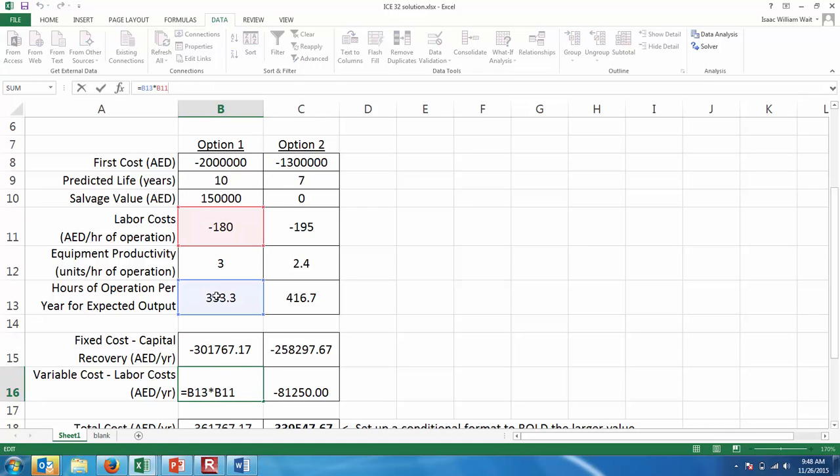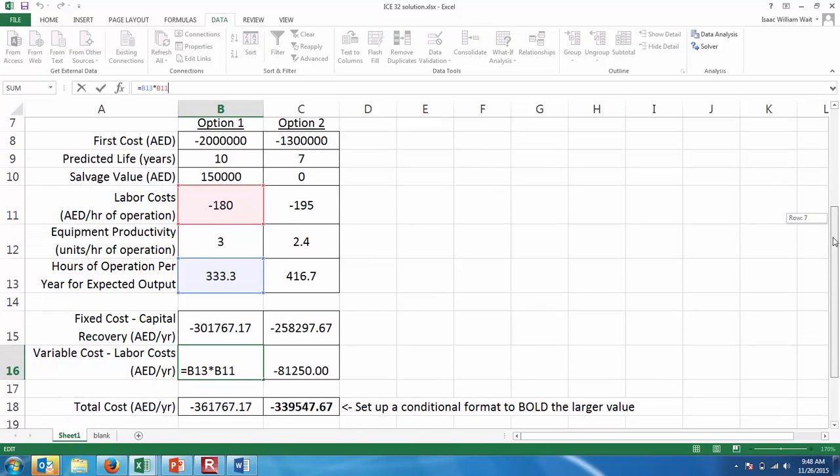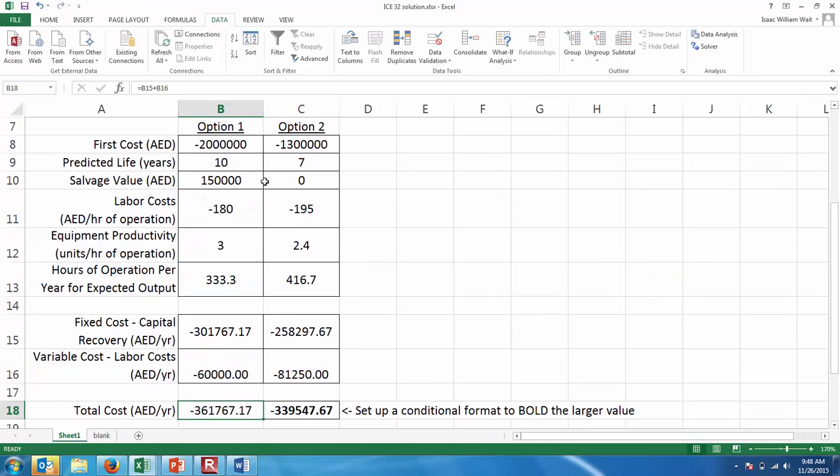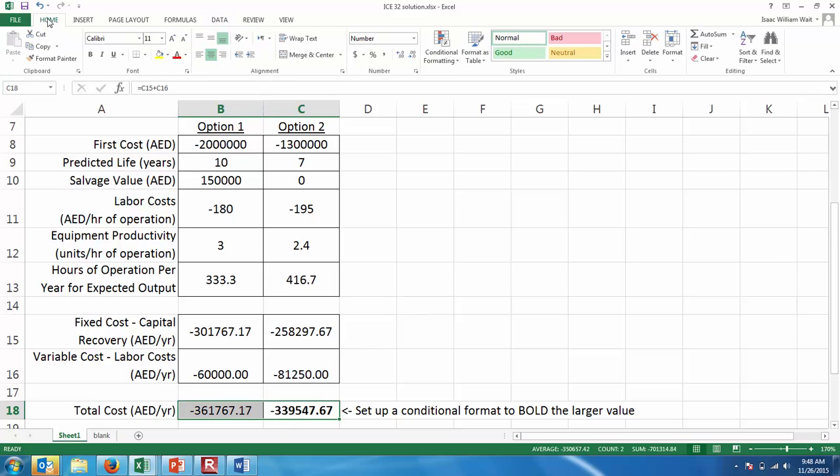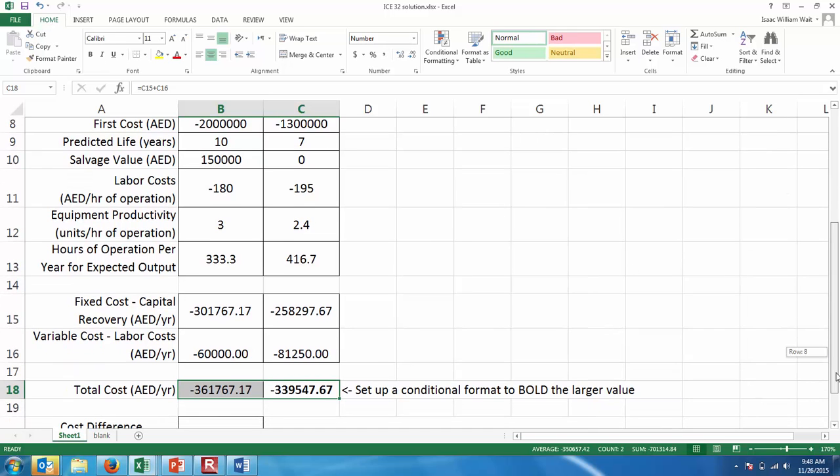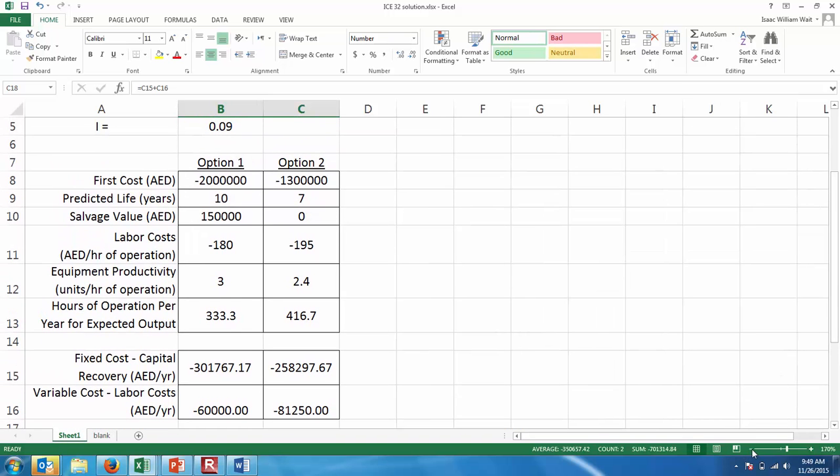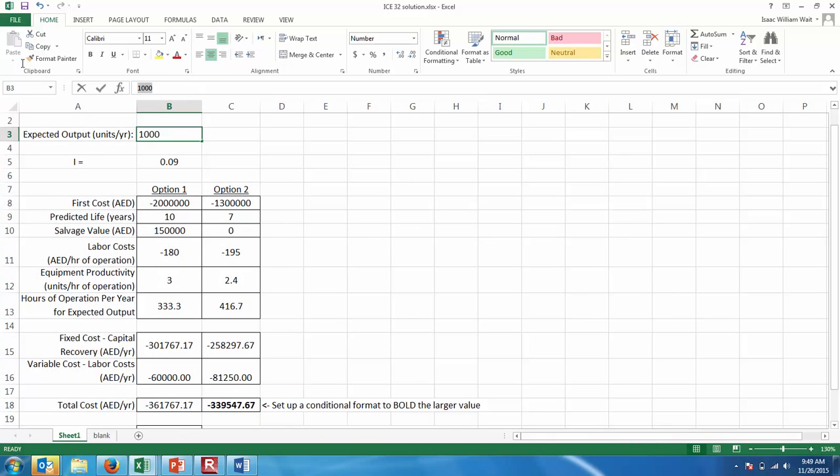The variable cost is simply the number of hours that the equipment is in operation multiplied by the labor cost. And so the total cost is the sum of the two. I've set up a conditional format so that it turns bold, whichever one has the lower cost, the least negative, is going to become in bold. So here's the answer for 1,000. If we have 3,000 items, you can see that then option one is cheaper. If we have 3,000 items, the break even point will be somewhere between the two.